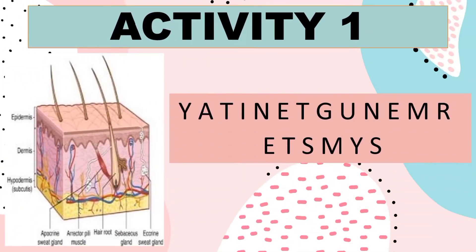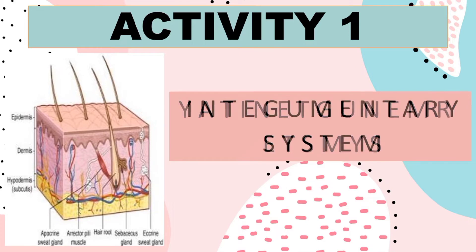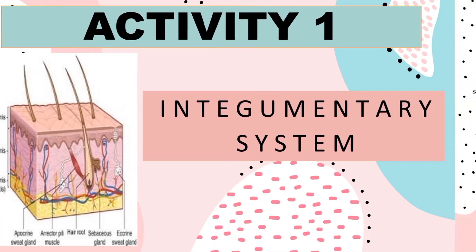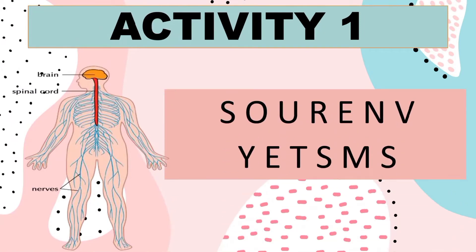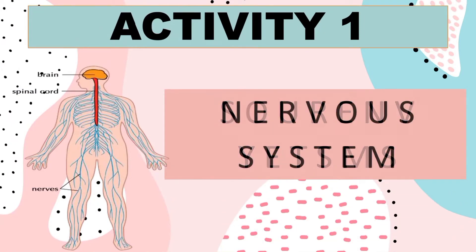Let's see if you know this one. Can you guess this one, class? Exactly! Very good! This is the integumentary system. What about this last picture? Do you know this? Correct! This is our nervous system.